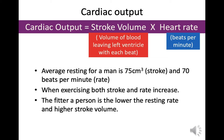An exam question has come up on this, so it's really important. Cardiac output equals stroke volume — that's the volume of blood leaving the left ventricle with each beat — times the heart rate in beats per minute. An average resting value for a man is 75 cm³ stroke volume and 70 beats per minute. When exercising, both stroke volume and rate increase; the fitter the person, the lower the resting rate and the higher the stroke volume.